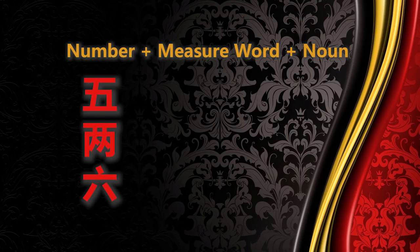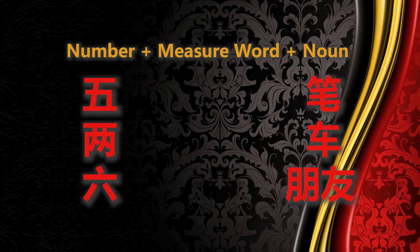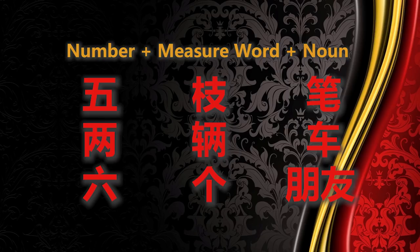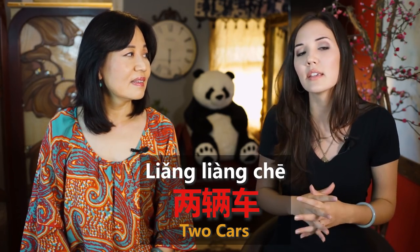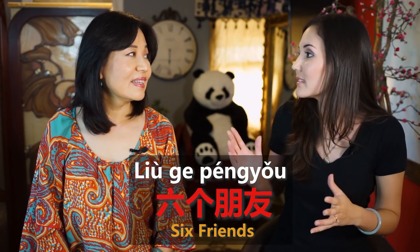Today we are talking about the basic ones. When you are adding a number to a noun, make sure that you add a measure word. So if I'm counting something — I have five pens, I have two cars, I have six friends — you're going to add a measure word to quantify how many things you're counting.